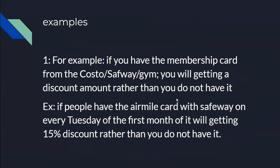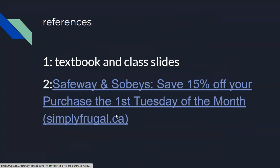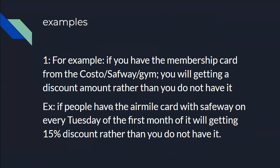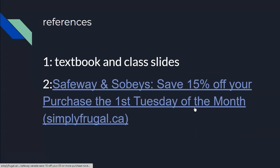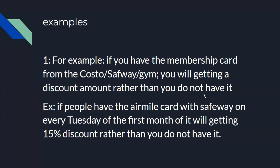For examples, many supermarkets and stores like Costco and gyms use membership cards offering discounts. For instance, a supermarket's membership card may offer 15% off if you spend more than fifty dollars in the first Tuesday of the week. Without the card, you do not receive the discount. This is a real-world example of a two-part tariff. The last slide links to the textbook examples used. Thank you.